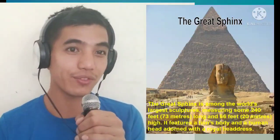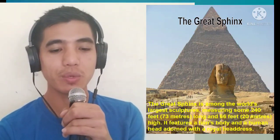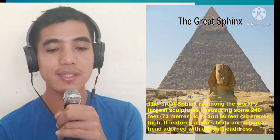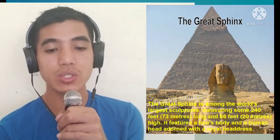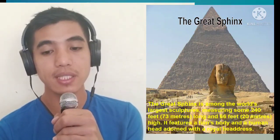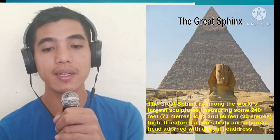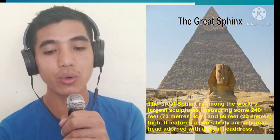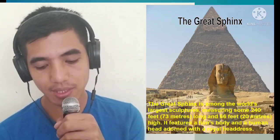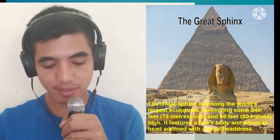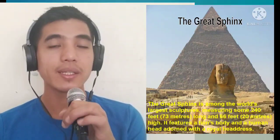Next is the Great Sphinx. The Great Sphinx is among the world's largest sculptures, measuring about 240 feet (73 meters) long and 66 feet high. It features a lion's body and a human head adorned with a royal headdress — a combination of human and lion.